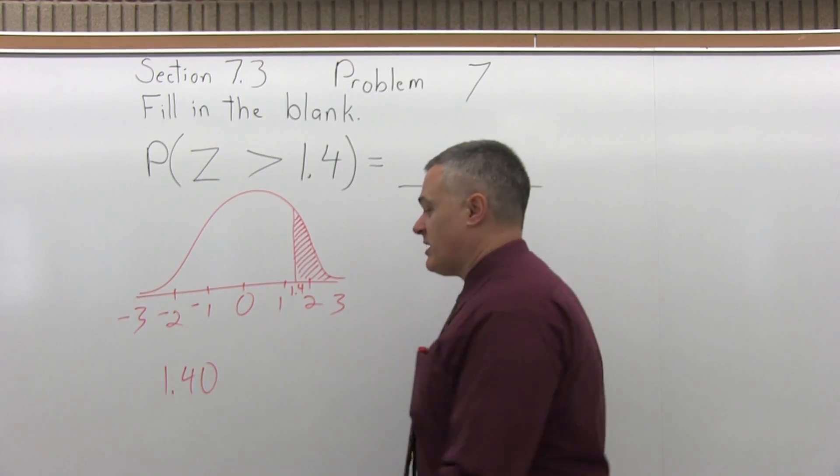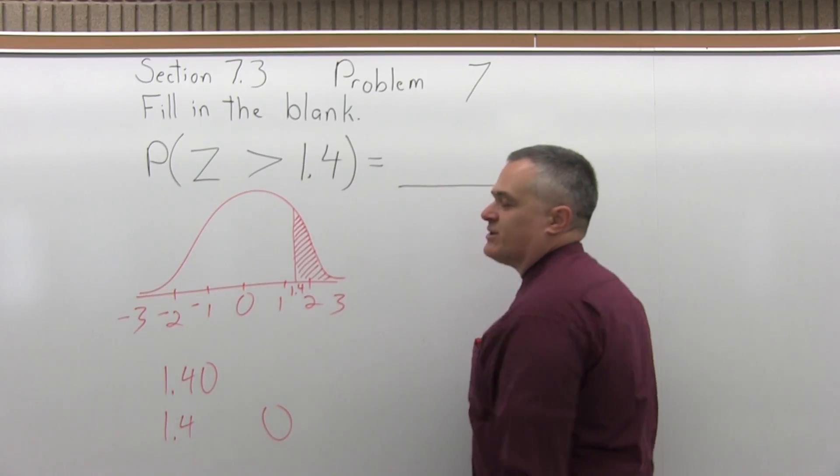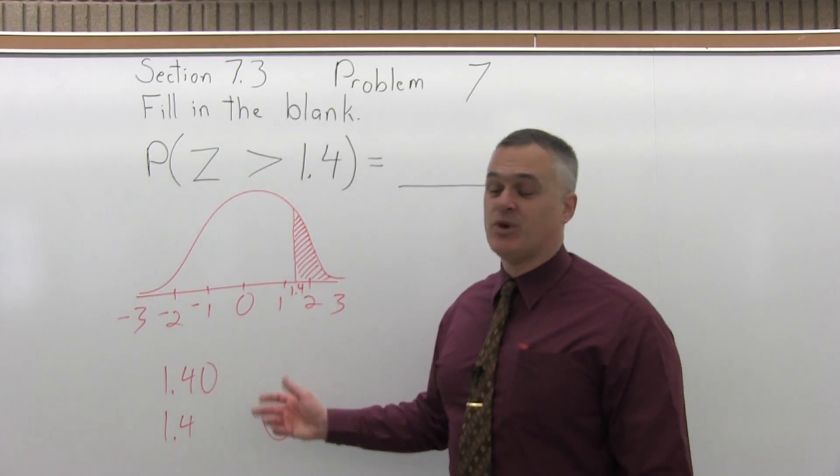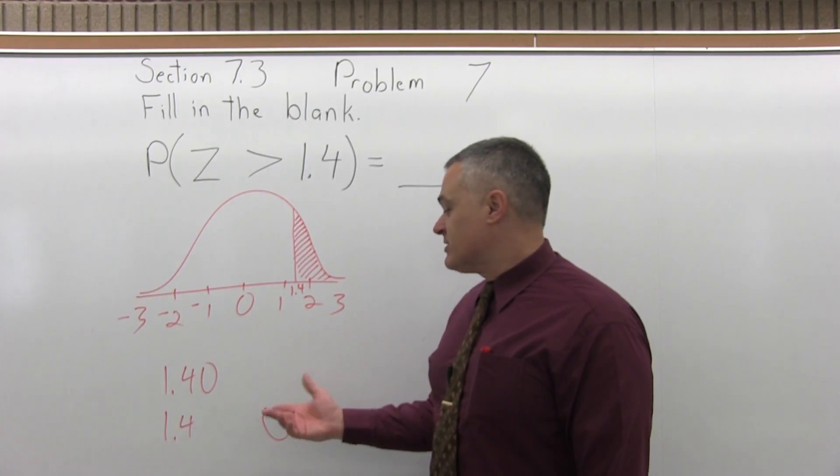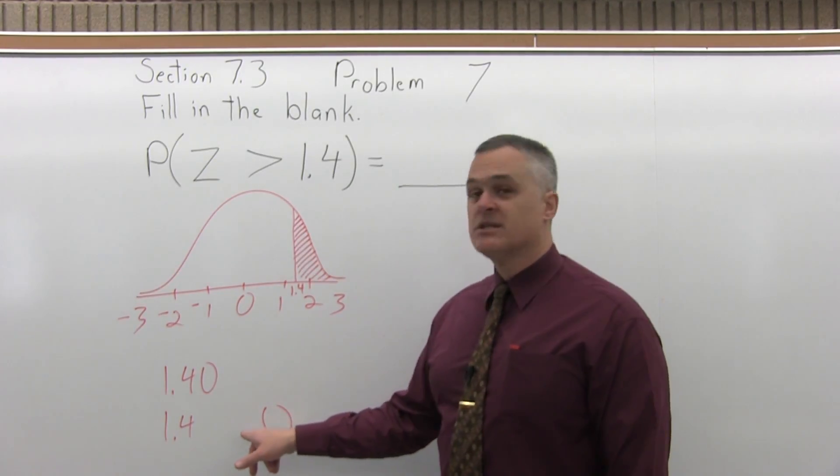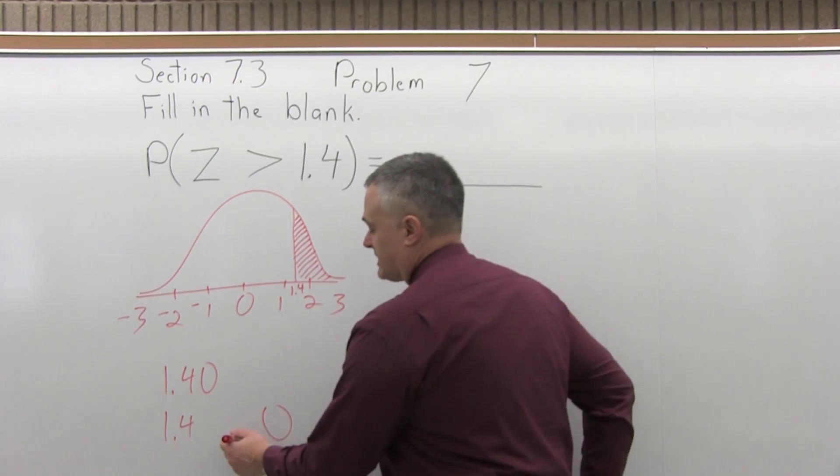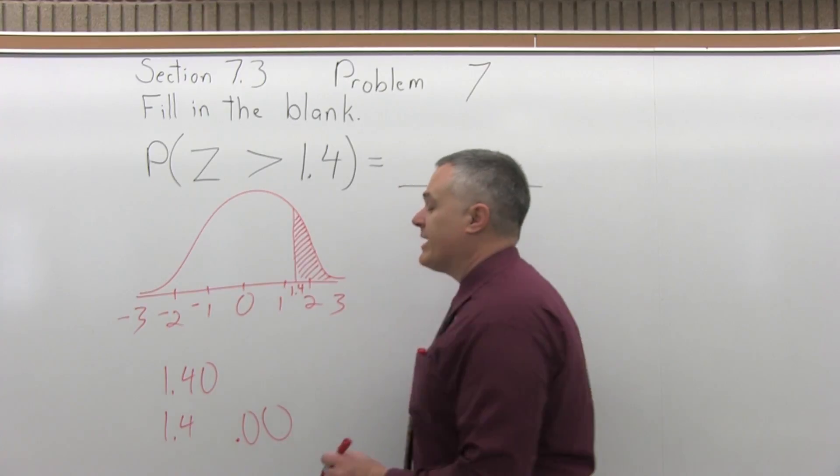Next, you want to split the number into two parts by pulling off the rightmost digit. So the zero that we just added in, we actually pull it off. But there's a good reason why. It's going to tell us what column we need to look in. The third step is write a .0 in front of the rightmost digit that we pulled off. So instead of just plain old zero, it's .00.